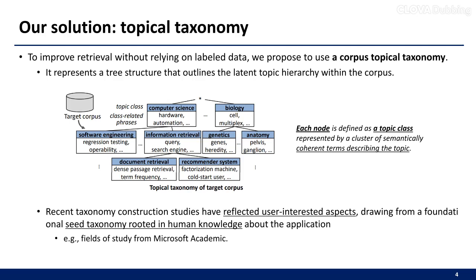To enhance retrieval without relying on labeled data, we propose the utilization of a corpus topical taxonomy. This taxonomy embodies a hierarchical tree structure that delineates the latent topic hierarchy within the corpus. The illustration below depicts the taxonomy, with each node defined as a topic class represented by a cluster of semantically coherent terms describing the topic.